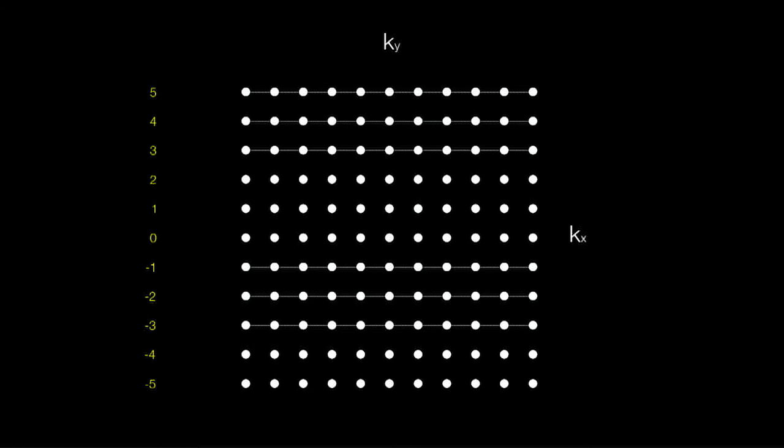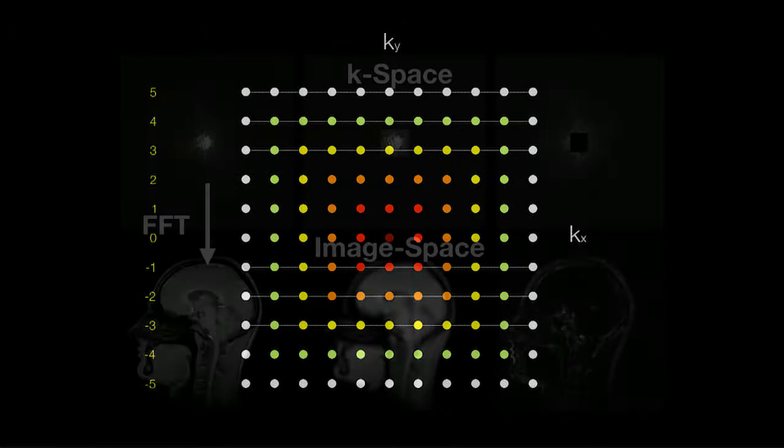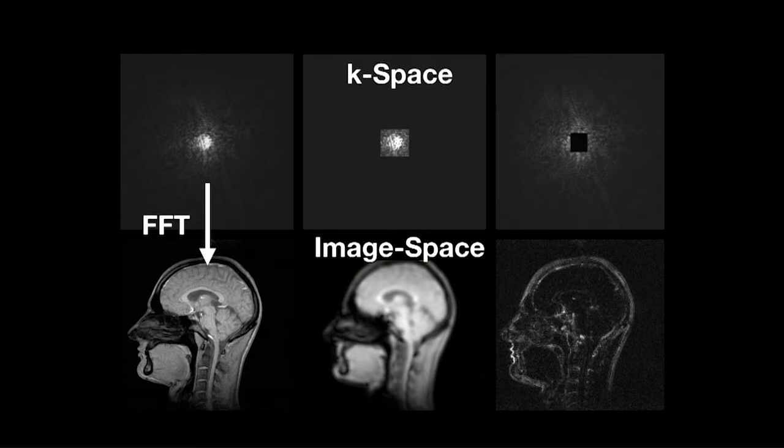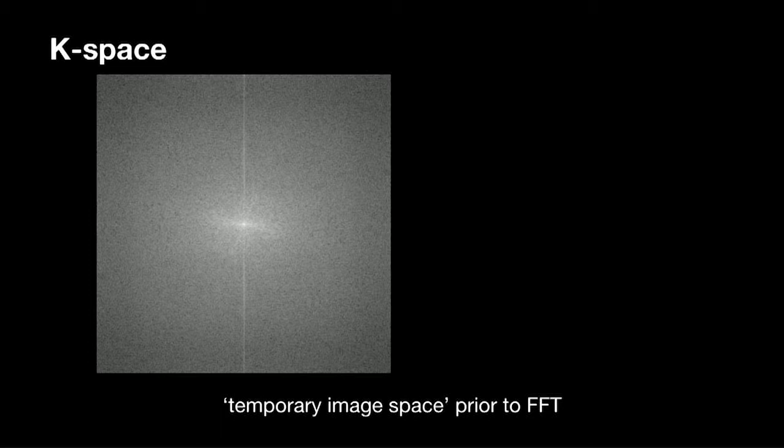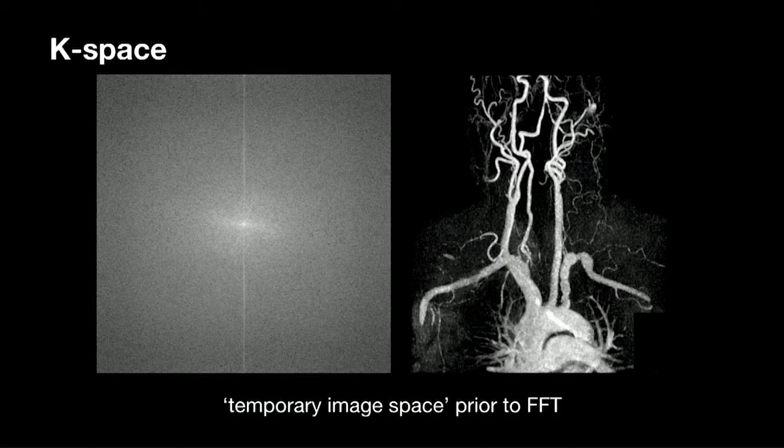Just a reminder about K-space: the centre of K-space determines our contrast, and the peripheral lines of K-space determine edge definition. In contrast-enhanced MR we have very sparse data. We can sample the centre of K-space and pretty much ignore a lot of the periphery and still get a very good angiogram.